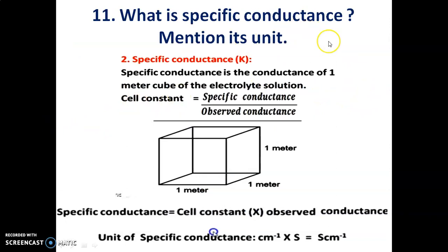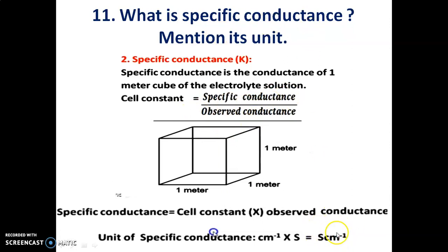What is specific conductance? Mention its unit. Specific conductance is the conductance of one cubic meter of the electrode solution. One relation is: cell constant equals specific conductance divided by observed conductance. The unit of specific conductance is Siemens per centimeter.